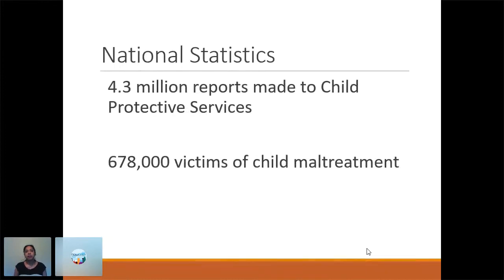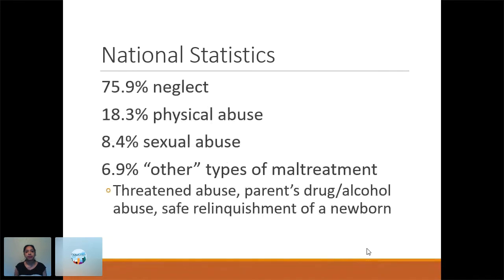We're going to talk about how common child abuse is. These statistics are from 2018. Nationally in the United States, 4.3 million reports were made to Child Protective Services. Of those, 670,000 children were thought to be victims of child maltreatment. The most common form is neglect, followed by physical abuse, sexual abuse, and then other types, such as being threatened by a parent or caregiver, parent's drug and alcohol abuse, or safe relinquishment of a newborn.